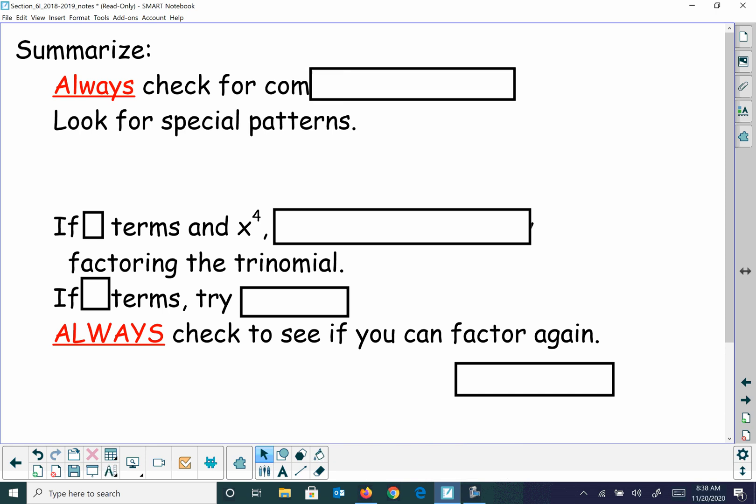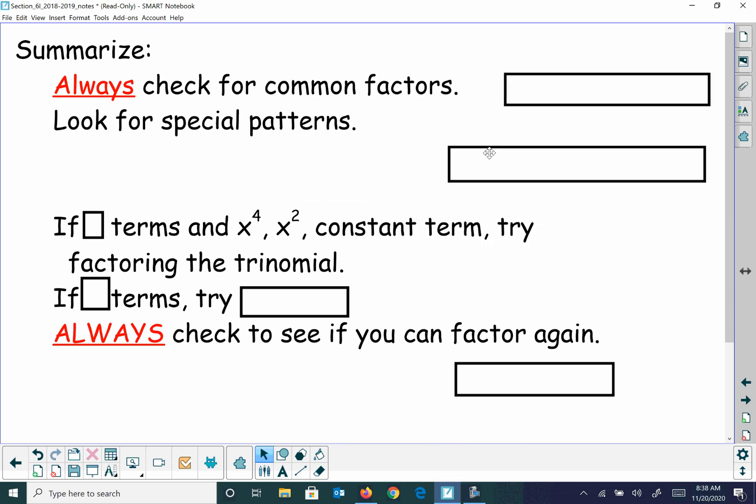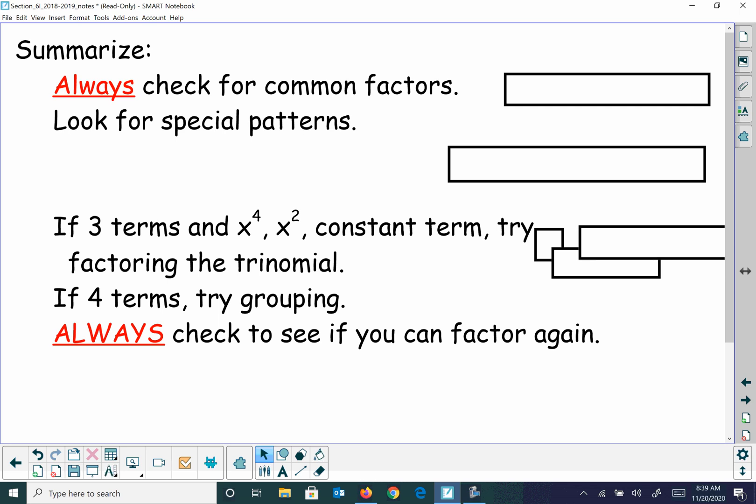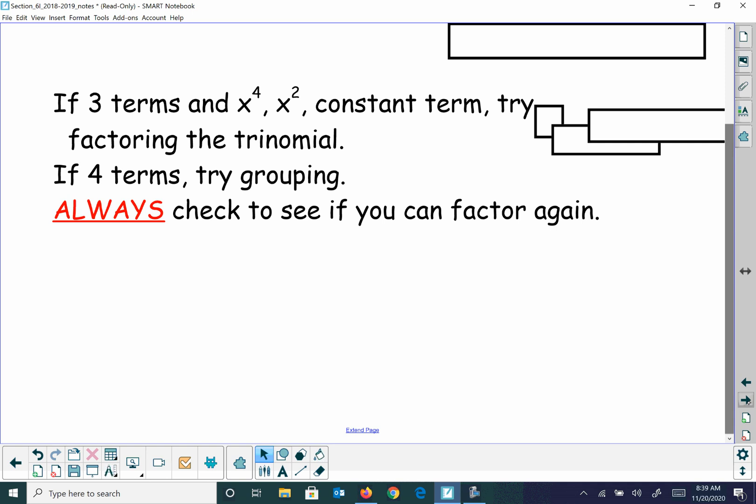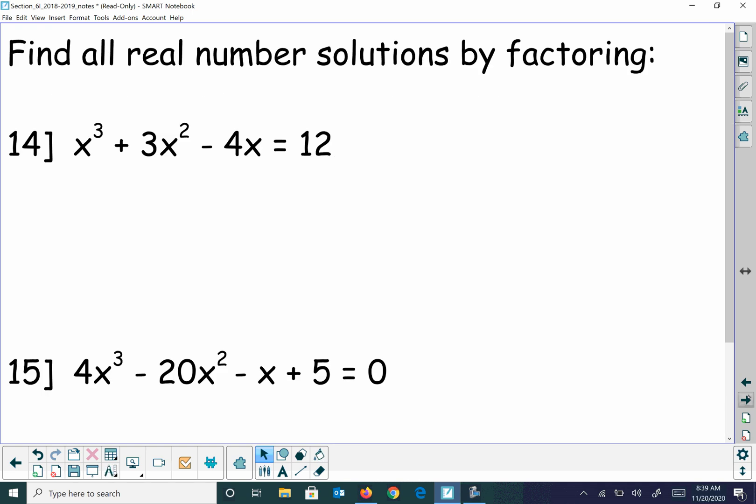All right, just so to summarize, always check for common factors. Look for patterns. If 3 terms and x squared and x for the 4th, x to the 2nd, and constant term, try factoring the trinomial. If there's 4 terms, try factor by grouping. And you can always check if it will factor again, so make sure you don't have difference of 2 squares.